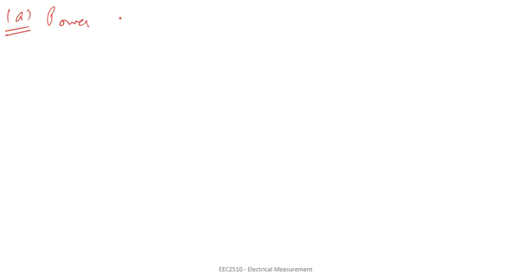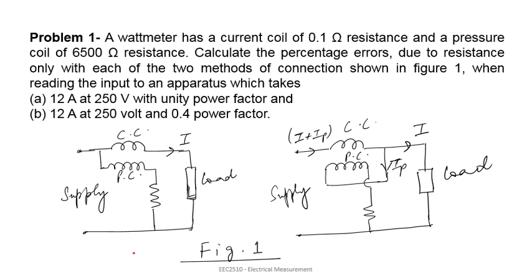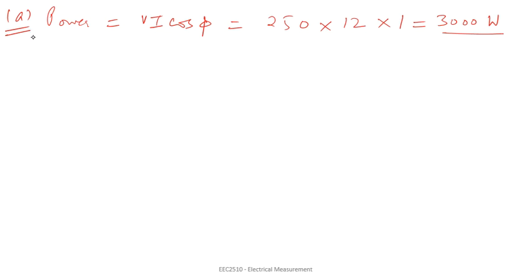Let us solve Part A first. The power is V·I·cos φ. Voltage is 250 volt, current is 12 ampere, and unity power factor is given, so the power will simply be 3000 watt. For the two connections shown in Figure 1, let us call them Figure 1a and Figure 1b.